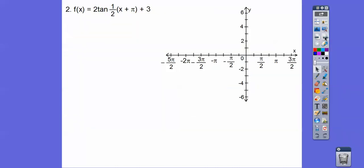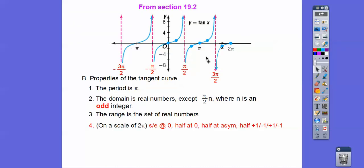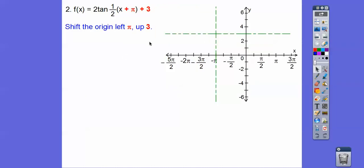Let's do this tangent graph. On tangents, there's one period in π. We're going to focus on this area — the length is π, from π/2 to the left and π/2 to the right. Let's shift the origin: to the left π, up 3. Now notice these are going by π/4: π/4, 2π/4 = π/2, 3π/4, 4π/4 = π, 5π/4, 6π/4. We go to the left π, up 3. To get to this asymptote, there are 4 spaces.